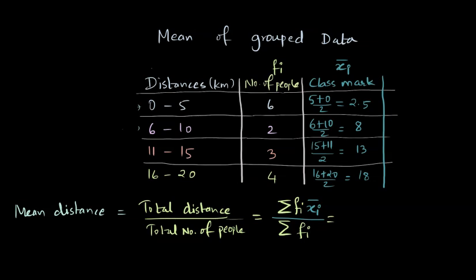Let's try and calculate this. So if we talk about summation Fi Xi, it will be six people walking 2.5 kilometers plus two people walking eight kilometers plus three people walking 13 kilometers plus four people walking 18 kilometers. And we will divide this by summation Fi or total number of people, and that's six plus two plus three plus four, which is 15.